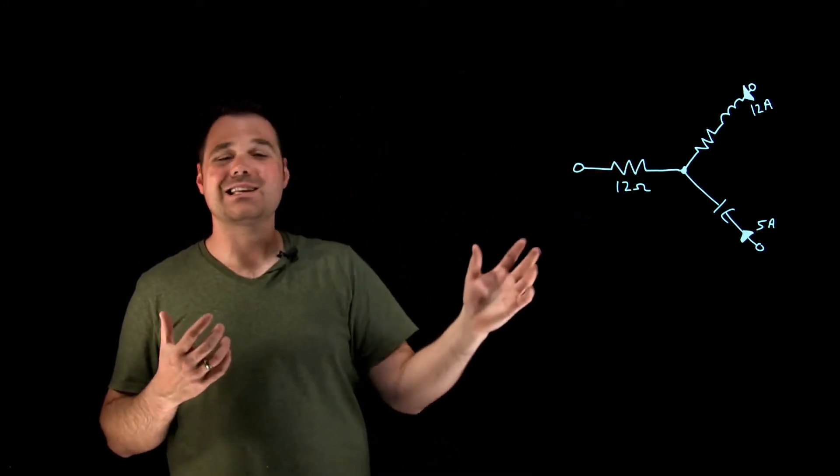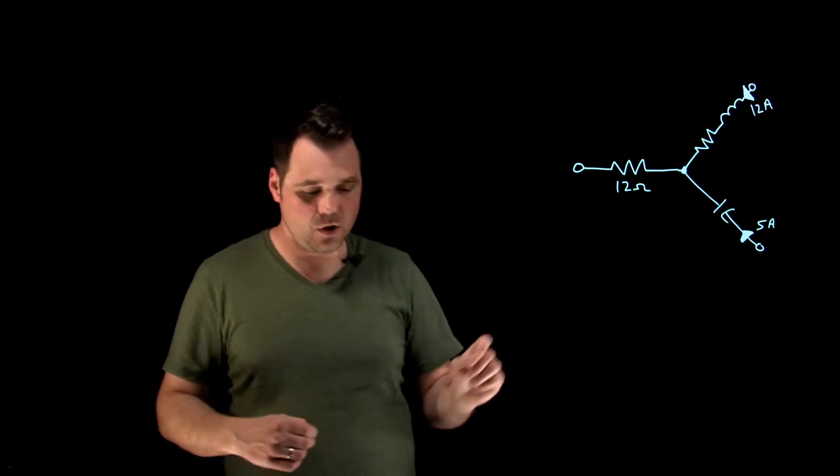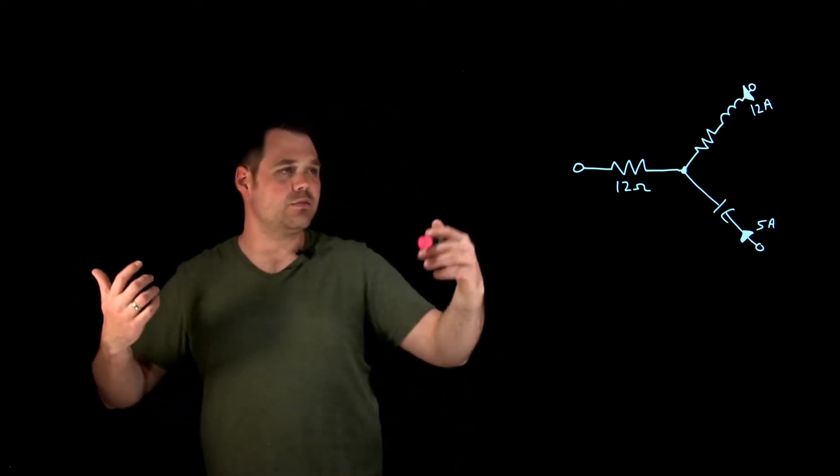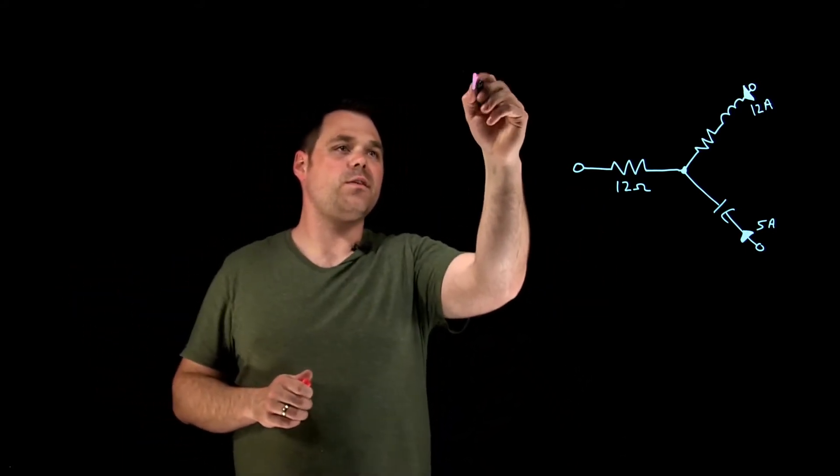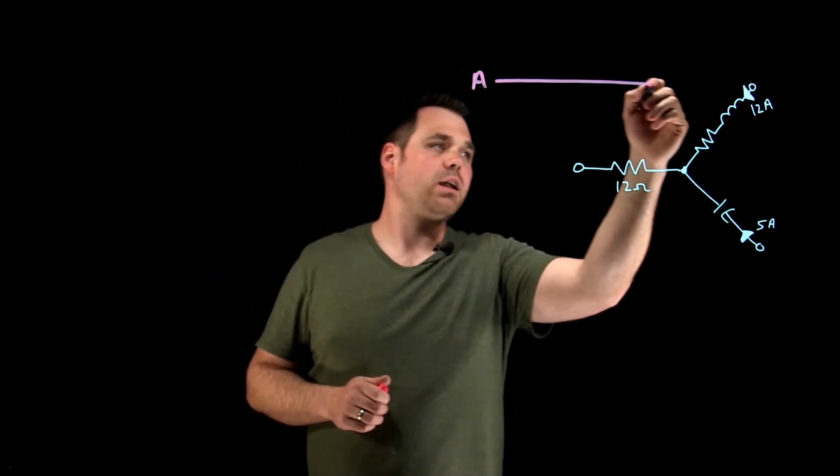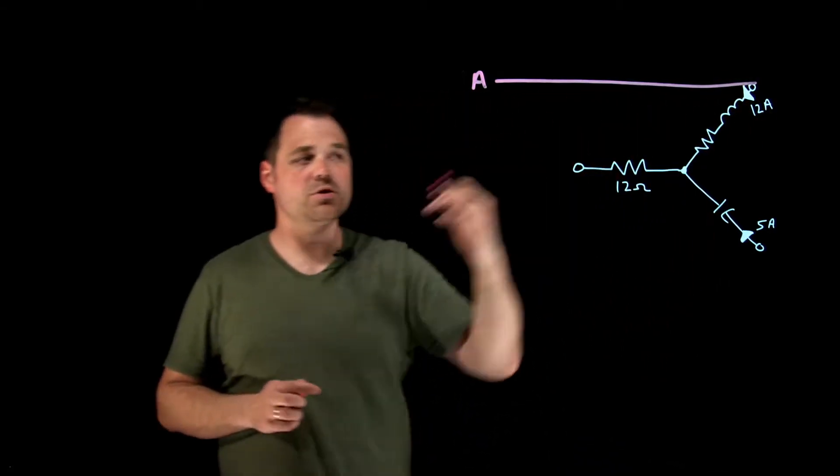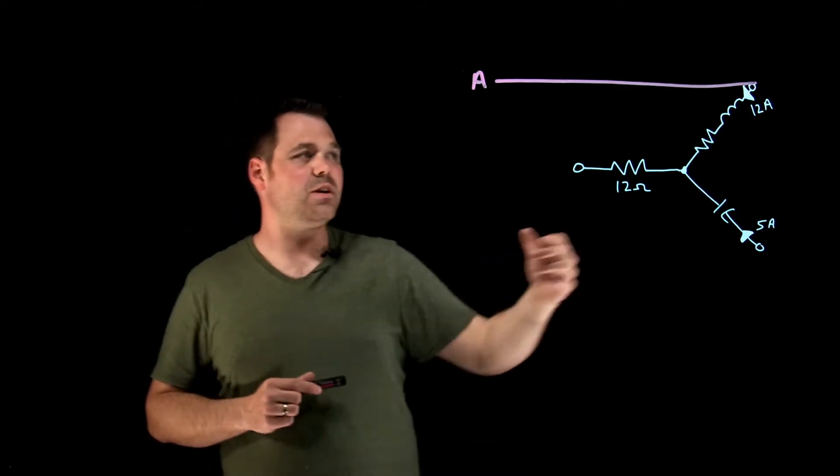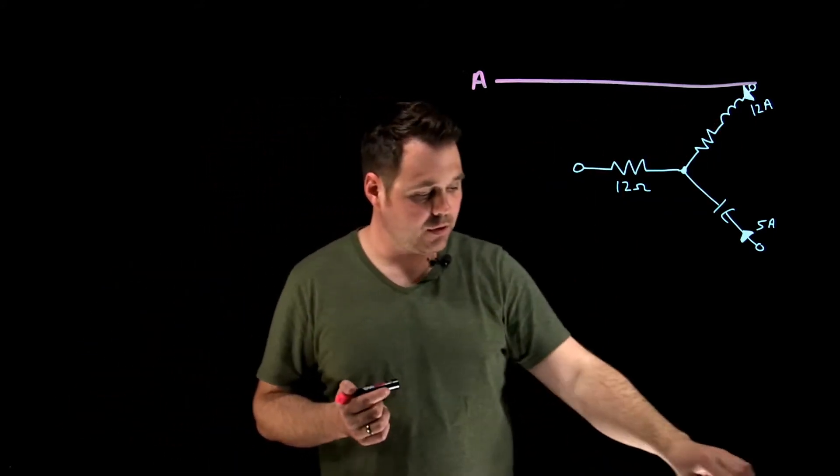What we've got here is a three-phase unbalanced Y load. So what you can see here is I've got three phases. Let's call this one phase A. Our line A is connected over to here, which makes that one phase A. So phase A is a coil that has 12 amps flowing through it.